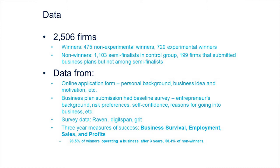I have data from 2,500 of these firms — all the winners plus a selection of losers who reached the semi-final stage. I have data from their online application forms, and I embedded many questions in those business plans about family background, reasons for going into entrepreneurship, and measures like Raven test scores of cognitive ability.